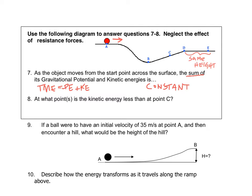Question 8 asks at which points the kinetic energy is less than at point C. The ball moves fastest at B, the lowest point. That means at positions A, D, and E — which are all higher than C — the ball is moving slower and has less kinetic energy than at point C. So A, D, and E are the three points with less kinetic energy than C.